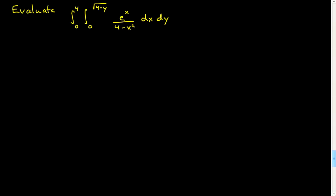It's the way we went through the process of exchanging the limits that matters. Let me do a couple more examples — it's really an important topic, and it's important that you get it right. This next one is from a past exam paper, where you were asked explicitly to evaluate this repeated integral by exchanging the limits. The key thing to ask is: what is omega, what is the domain corresponding to these limits?